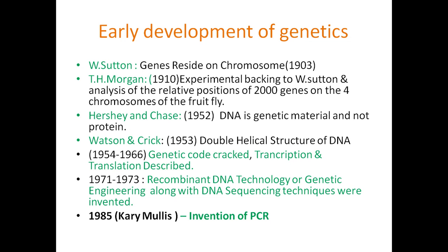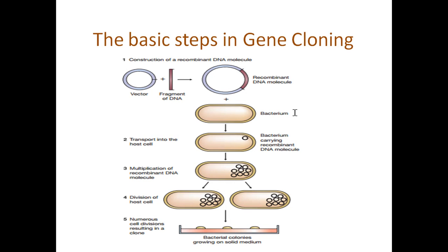Let us move to the basic steps of gene cloning. The main aim of gene cloning is to make identical copies of a particular gene. We do that because we want to study the gene — its functionality, position, sequence, and structure. The purpose is to amplify the amount of DNA or gene we have for analysis or further studies, or to clone it into a proper vector for further use.